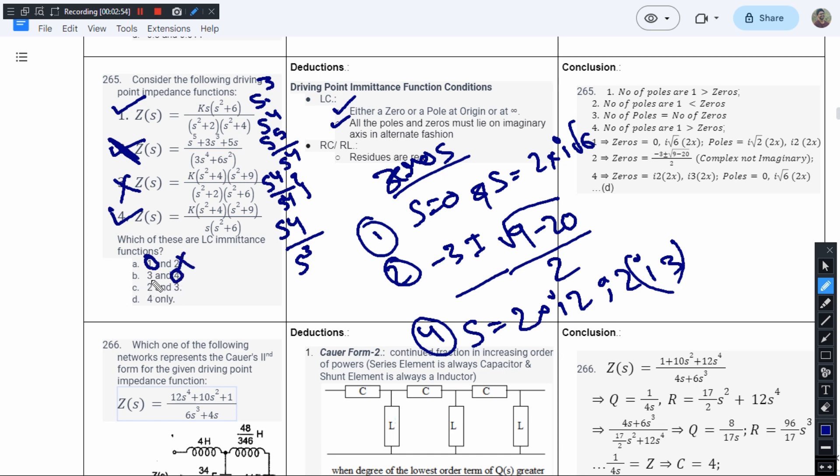Option B has 4 in it, but we have proved that 3 cannot be the answer, so this cannot be the answer. Option C has 2 and 3. We have eliminated the possibilities of 2 and 3 to be the answers for the question that has been asked.